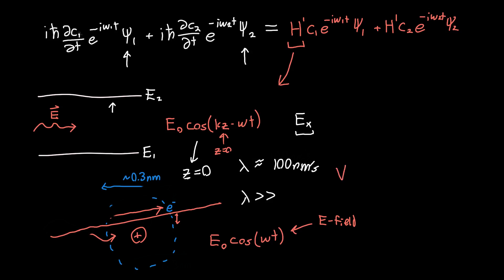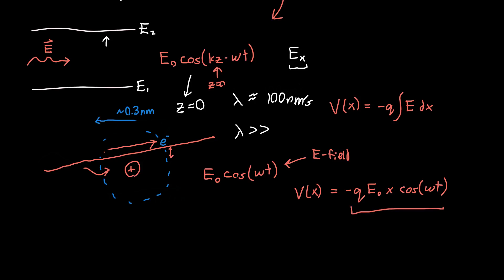And we know that the potential you can just get from an electric field. It's just minus Q times the integral of the electric field with respect to space. And so if you actually take that integral, you'll get that the potential is just equal to minus Q E0 times x times cosine of ωt. And so this is our perturbing Hamiltonian H' as a function of x and t. And really we can ignore the minus sign out front because it depends on where our wave starts and ends.